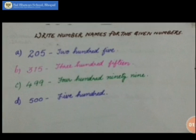The number name for 315 is: T-H-R-E-E H-U-N-D-R-E-D F-I-F-T-E-E-N. The third is 499. Read the spelling: F-O-U-R H-U-N-D-R-E-D N-I-N-E-T-Y N-I-N-E. The fourth one is 500: F-I-V-E H-U-N-D-R-E-D.